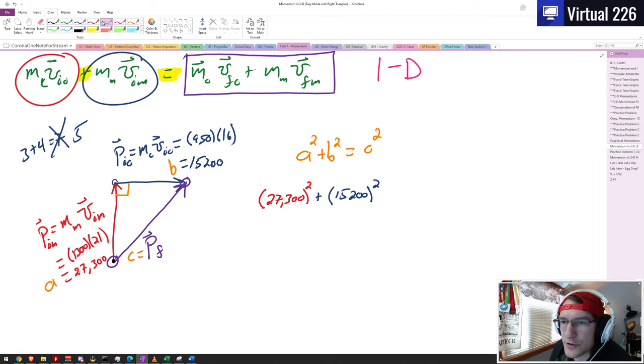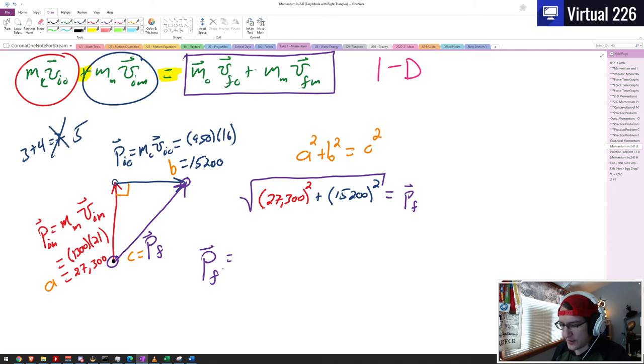Jeez, equals our c vector which is the final momentum, and then that would normally be squared, and to get rid of that square we take the square root, and that will give us our final momentum vector. So our final momentum vector, the quantity of it, is whatever that comes out to be. So 27,300 squared plus 15,200 squared, that is like 9.7 times 10 to the 1, 2, 3, 4, 5, 6, 7, 8. Let me take the square root of that and we get a value of 31,246. There's a decimal there but let's just ignore that for a second, and this is in newton seconds because it is a momentum. So that gives us our hypotenuse.